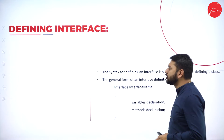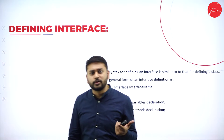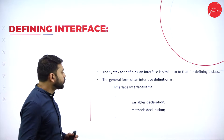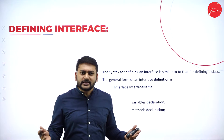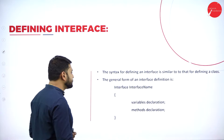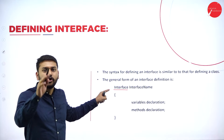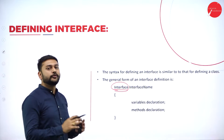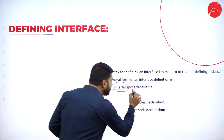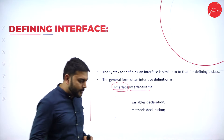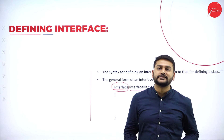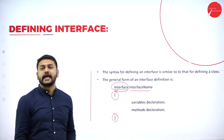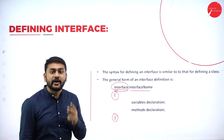How to define an interface is the next important question. By understanding how to define the interface we get a complete idea of what the interface is all about. To define an interface, the first keyword you need is 'interface', followed by the name of the interface — and you must follow the rules of identifiers — then an opening and closing curly bracket.